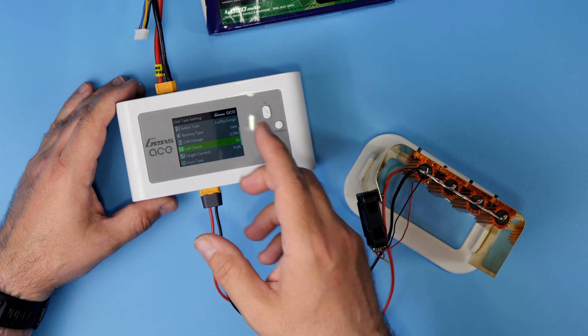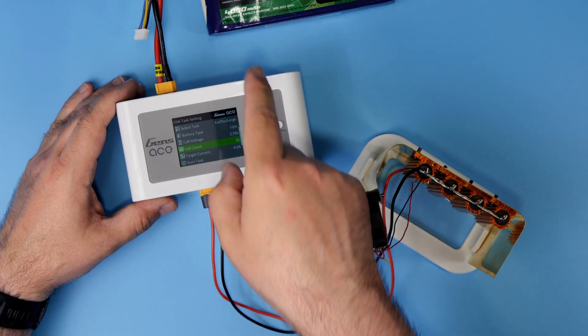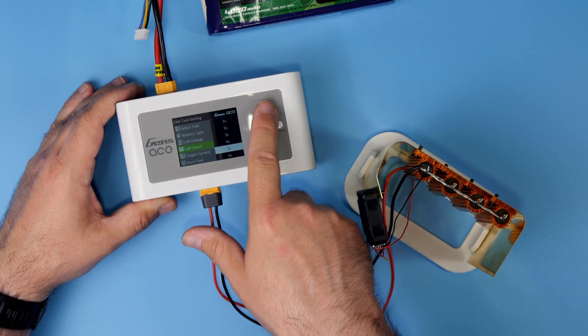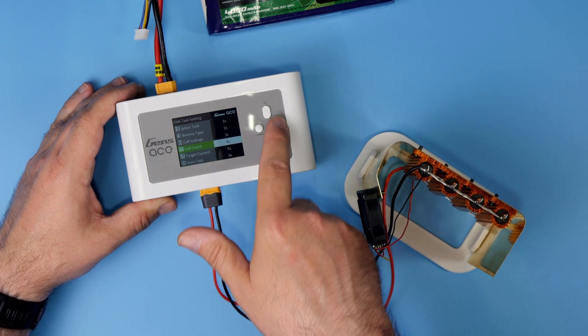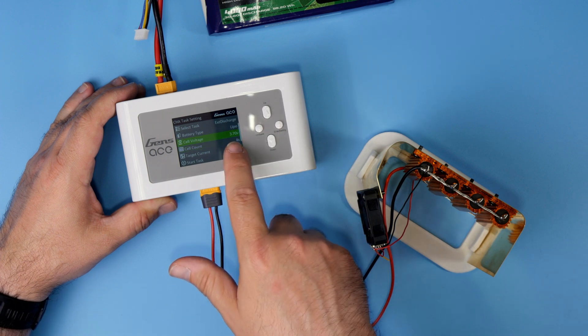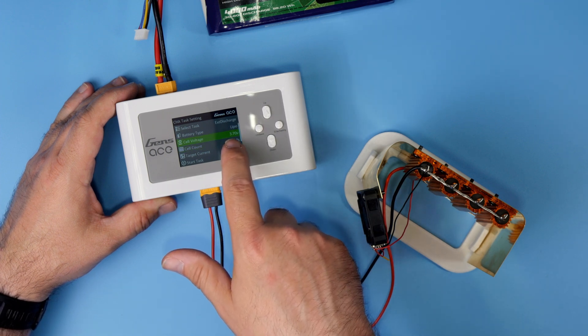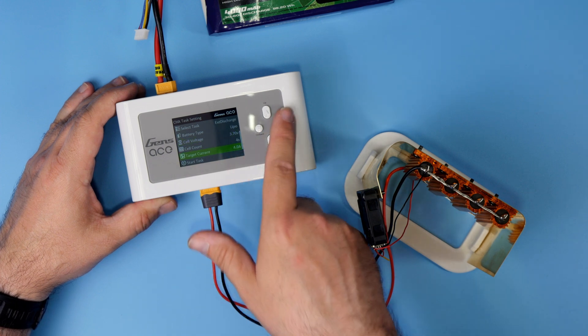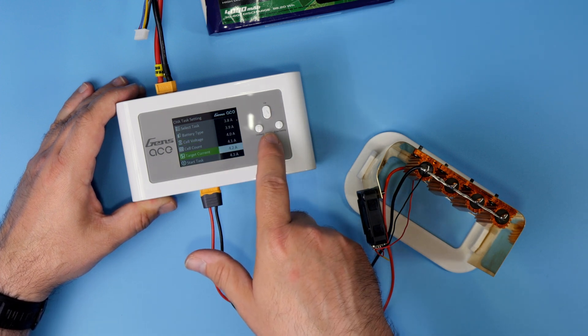Unfortunately, the charger is not auto-detecting the number of cells of the battery connected over here, so you have to inform the charger. In this case, we have 4S and we would like to discharge this battery to 3.7 volts per cell with the current of 6 amps.